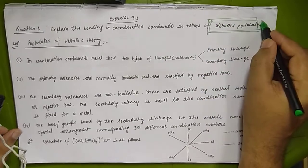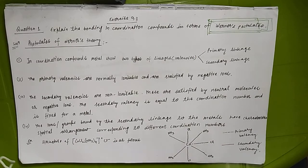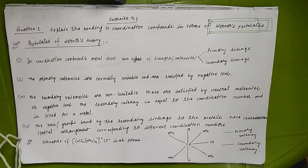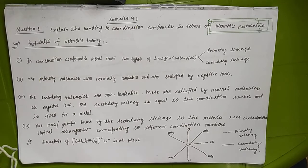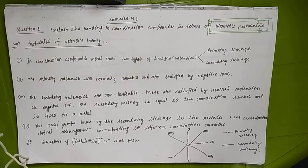We have to explain the bonding in the coordination compound according to Werner's theory. Werner theory gives the bonding in the complex coordination compound, and they say that there are two types of valencies: primary valency and secondary valency. Primary valency is ionizable and can be satisfied by the counter ion. Secondary valency is not ionizable.